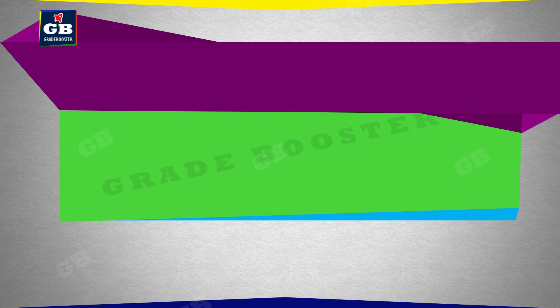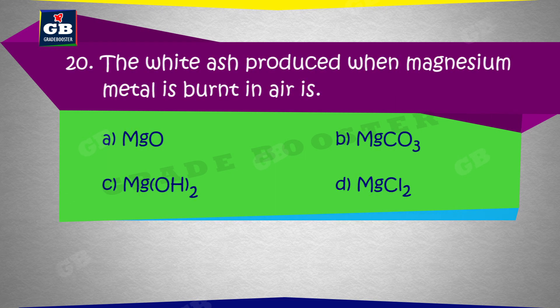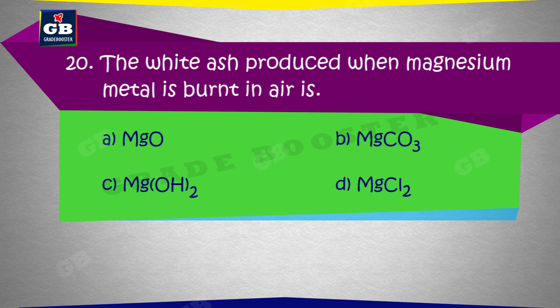The white ash produced when magnesium metal is burnt in air is: A. MgO, B. MgCO3, C. Mg(OH)2, D. MgCl2.